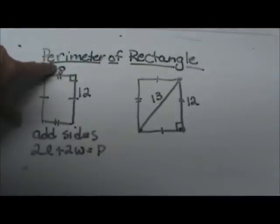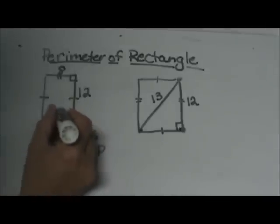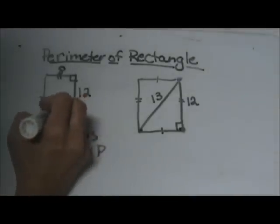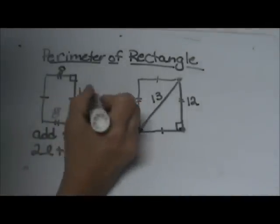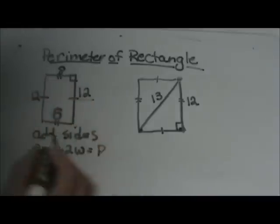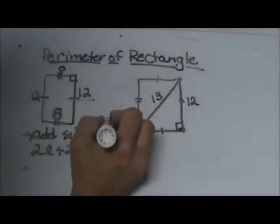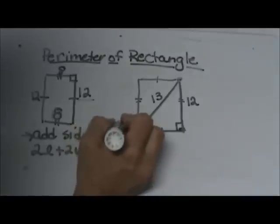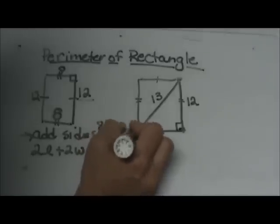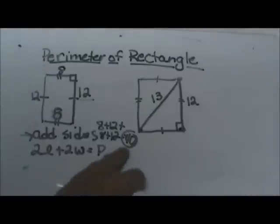If this side is 8, then this side must also be 8. Let's label that as 8. If this side is 12, the opposite side must also be 12. So we can add all four sides up to get the perimeter. So I would add 8 plus 12 plus 8 plus 12 to get 40. That would be the perimeter of our rectangle.